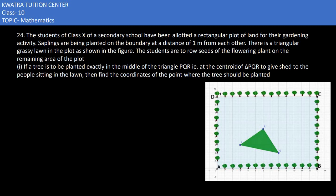Saplings are being planted on the boundary at a distance of 1 meter. There is a triangular grassy lawn in the plot as shown in the figure. The students are to grow seeds of the flowering plant on the remaining area of the plot.